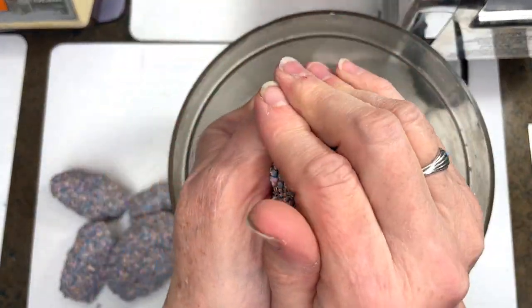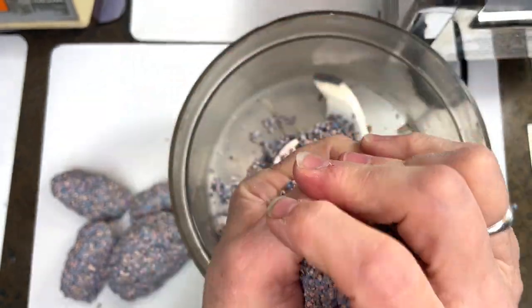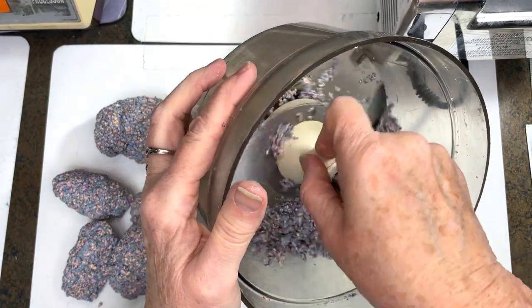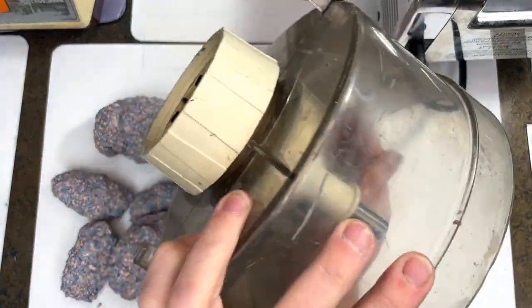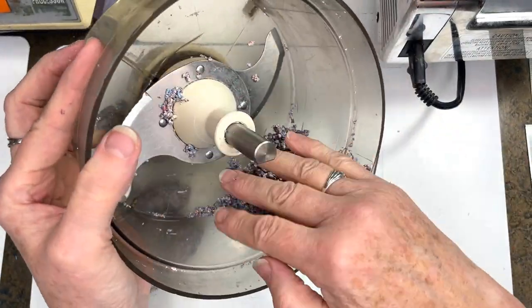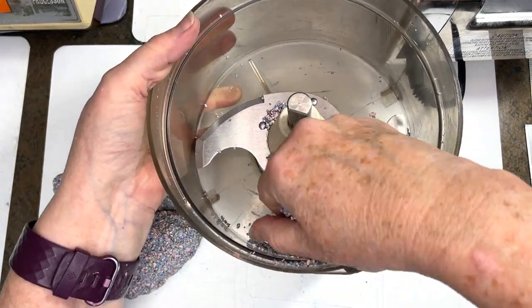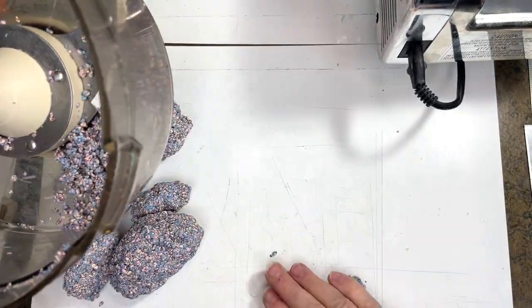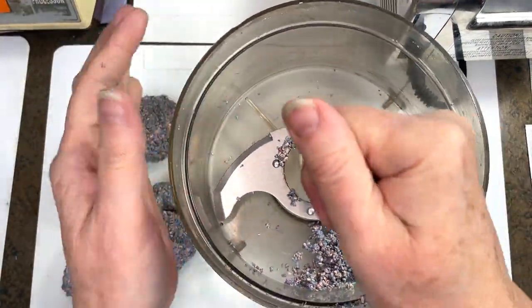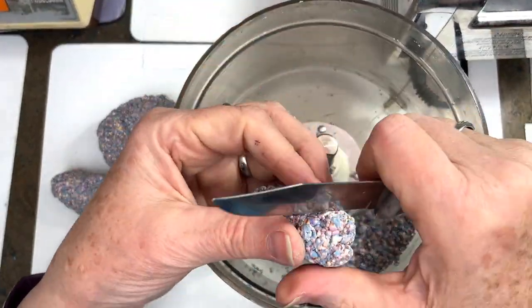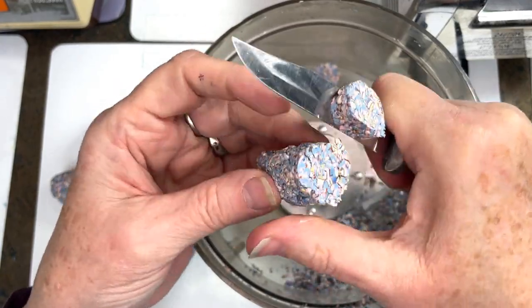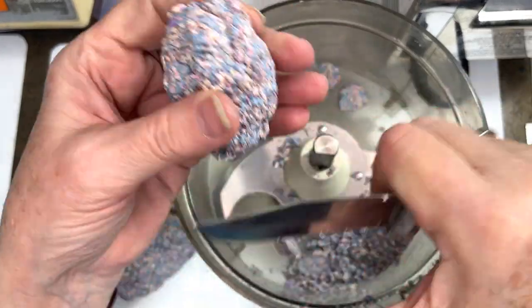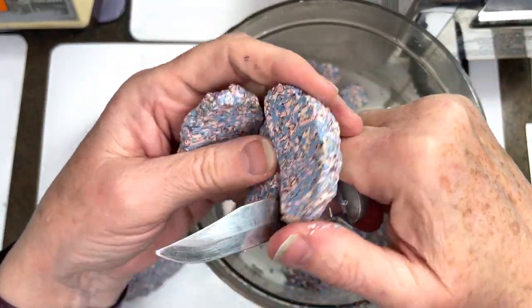So I'm compressing this into a log or roll, whatever you want to call it. I'm not real particular. If there's a few left in there, that's fine. It'll all come out in the end. So now that these are compressed together, I'm going to chop it up again. Just cut it up with a knife into chunks. And then I'm going to run it through my food processor second time.